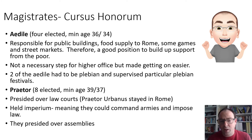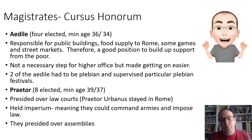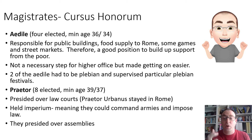The praetor: eight were elected each year, with a minimum age of 39 if you're plebeian, or 37 if patrician. Their key role was presiding over law courts. The praetor urbanus stayed in Rome. They held imperium, meaning they could command armies and impose laws, and they were escorted by guards as they went around. They also presided over assemblies. Praetor is a really senior and important position, and the concept of imperium is hugely significant. Once you've completed your praetorship you become pro-praetor, which often leads to a military command or command of a province — a way of amassing huge wealth, influence, and possibly glory.